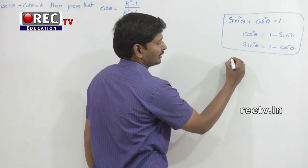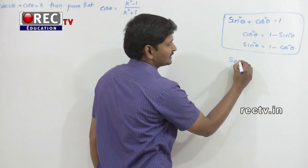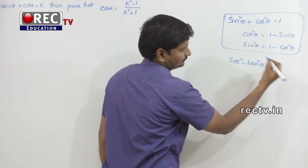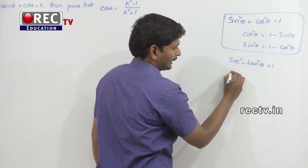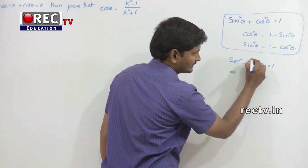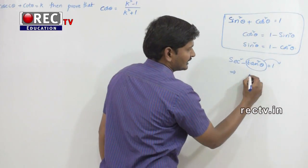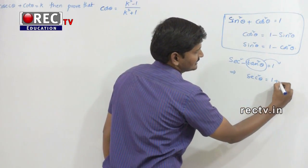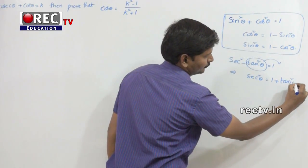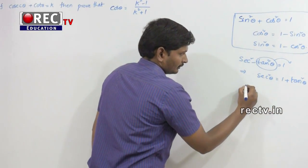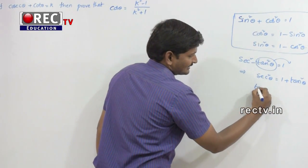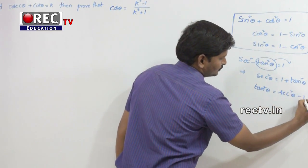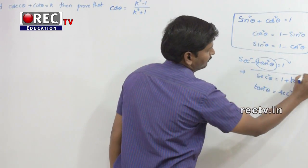Next, the second identity: sec²θ - tan²θ = 1. From this, sec²θ = 1 + tan²θ, and tan²θ = sec²θ - 1. We have to remember these two.